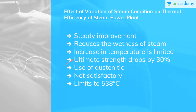However, the increase in steam temperature is limited by the properties of the construction materials of boilers and turbines. The ultimate strength of unalloyed steel drops by about 30% as the steam temperature rises from 400 to 500 degrees centigrade. Alloying with chromium and molybdenum and also by the use of austenitic instead of ferritic steels increases the strength at high temperatures.